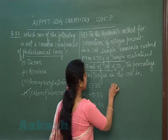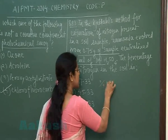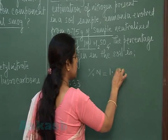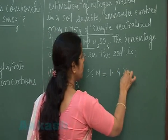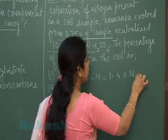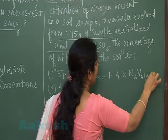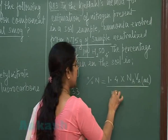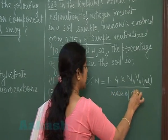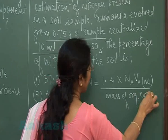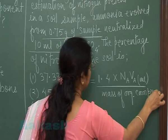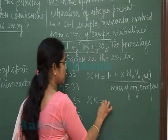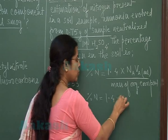In this method we can directly calculate the percentage of nitrogen using the formula: 1.4 × N × V_a, where volume must be taken in milliliters, divided by the mass of the organic compound taken. Now applying this formula to calculate percentage of nitrogen, it is 1.4 times the normality of the acid.